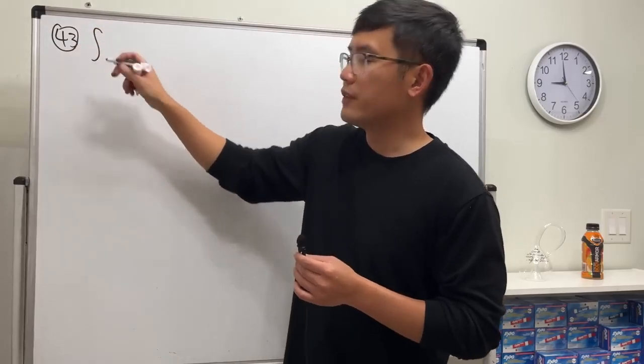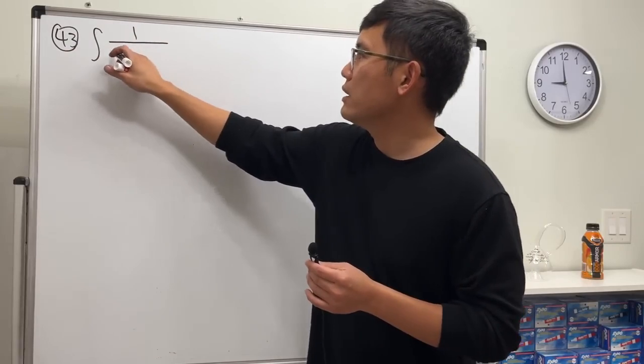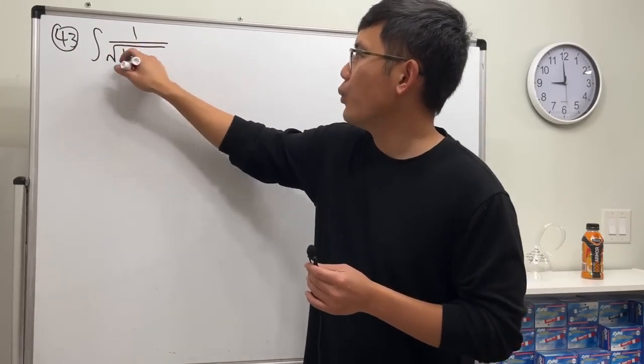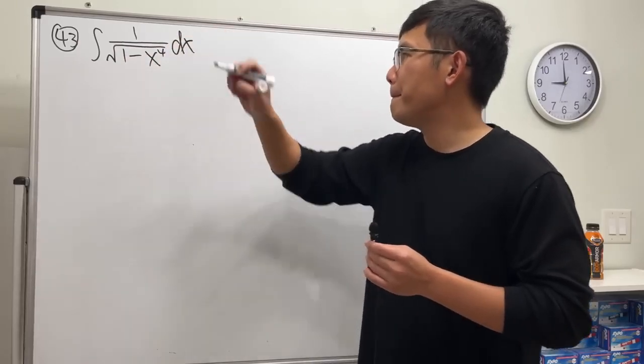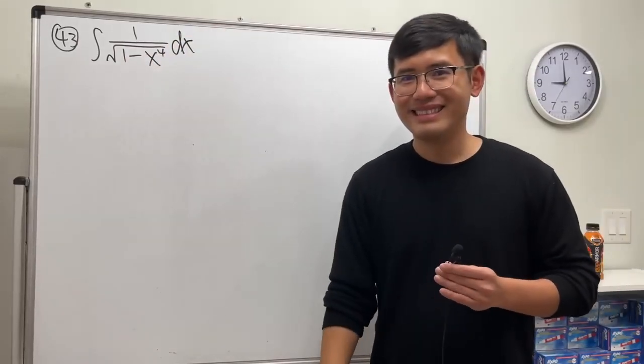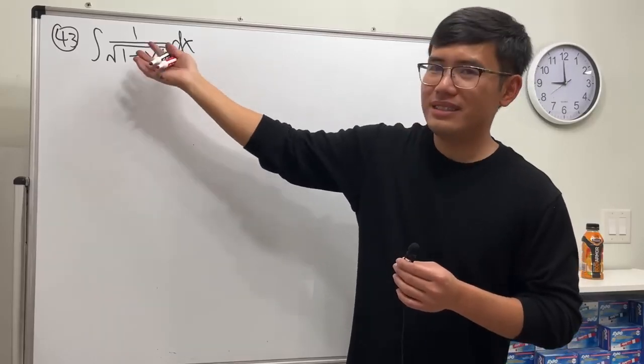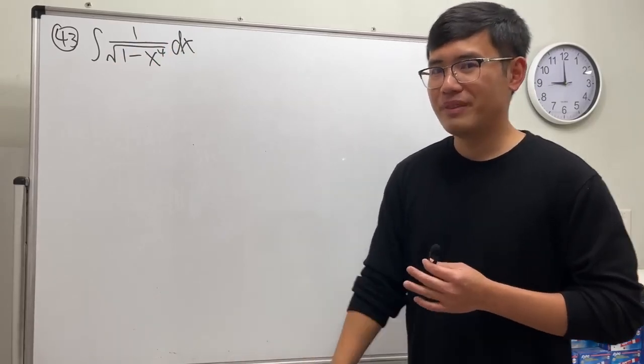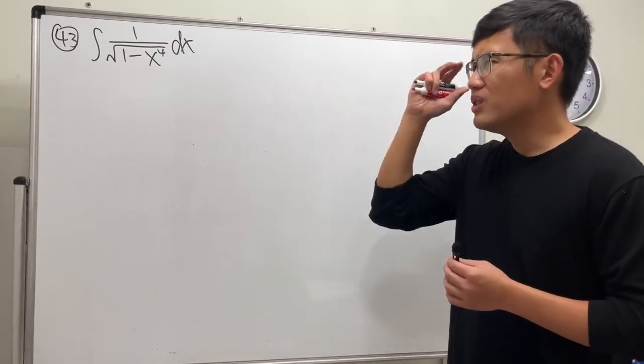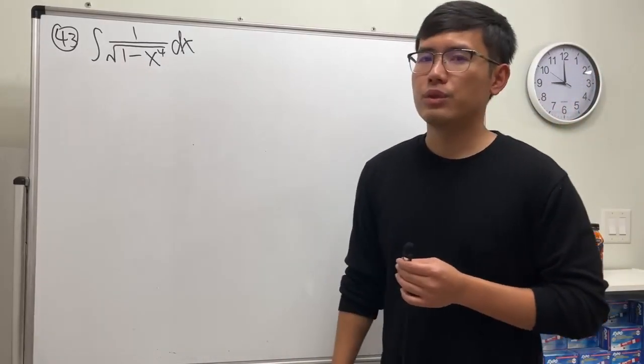It's not possible with regular functions: the integral of 1 over square root of 1 minus x to the fourth power. If it's 1 minus x squared in the square root, it's easy—just inverse sine. But this right here, not so easy anymore. So let's see what we can possibly do. 1 minus x to the fourth power—we can factor it.